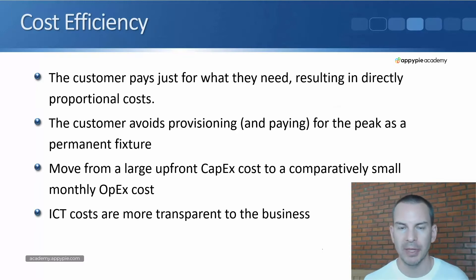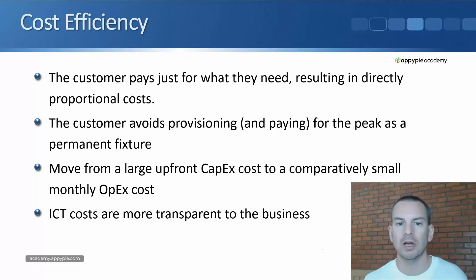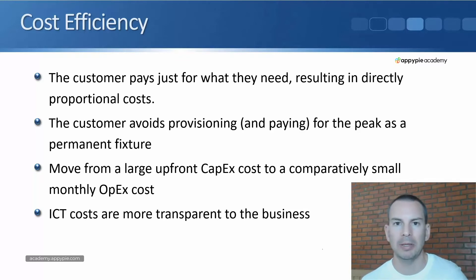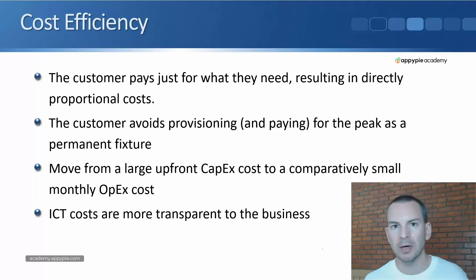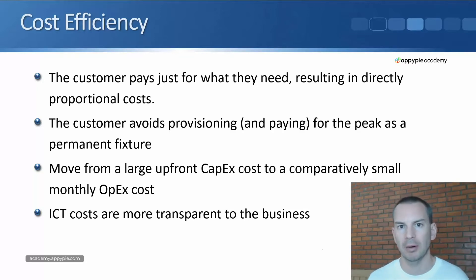Next, we have cost efficiency. The customer pays just for what they need, resulting in directly proportional costs. The customer avoids provisioning and paying for the peak as a permanent fixture. For example, if a customer on average requires 10 servers but at peak times requires 20 servers, with an on-premises solution they would have to deploy all 20 servers all the time. With a cloud solution, we can use automatic scaling — 10 servers normally, scaling up to 20 as needed, then back down. So we end up only paying exactly what we need as and when we need it.